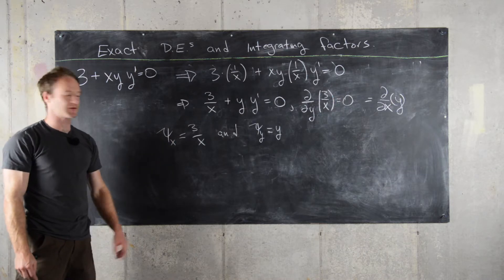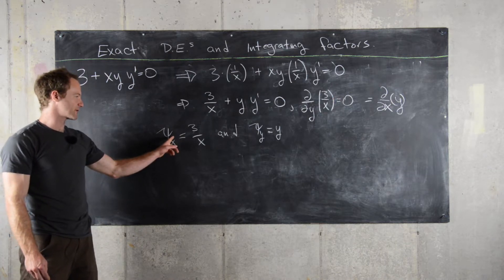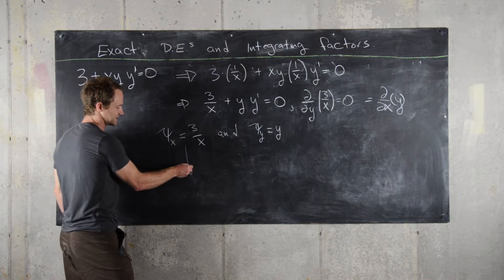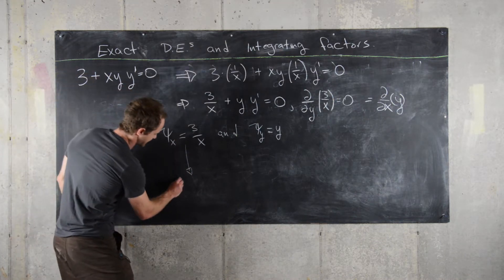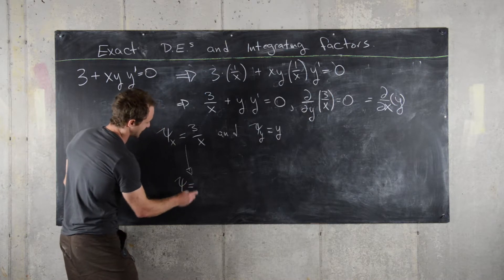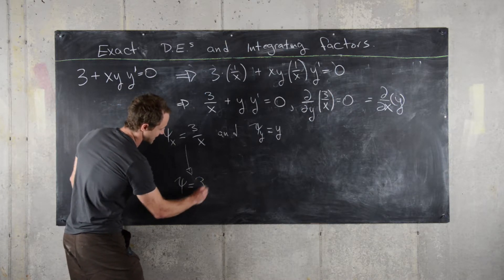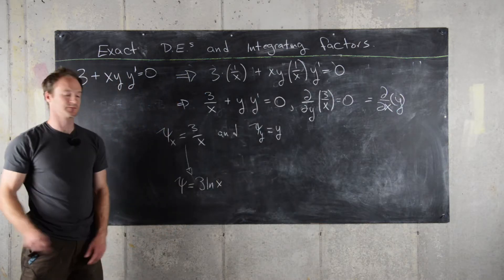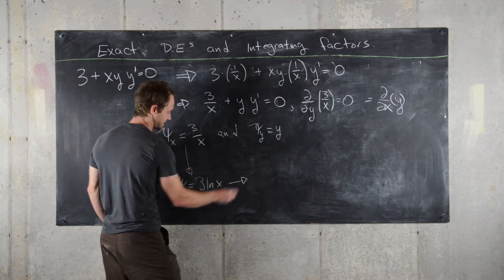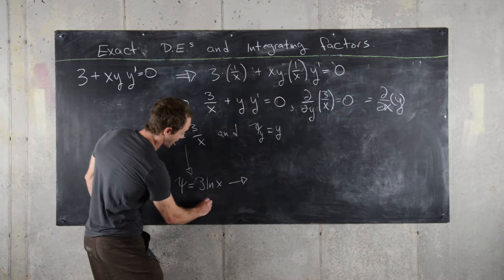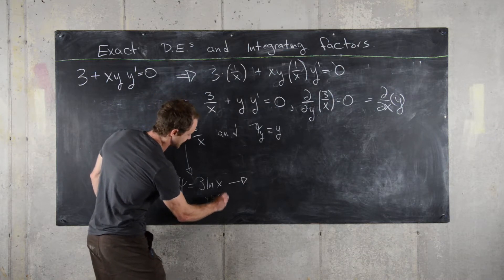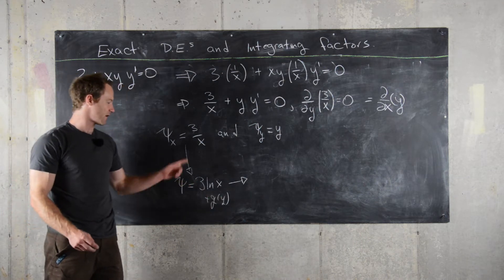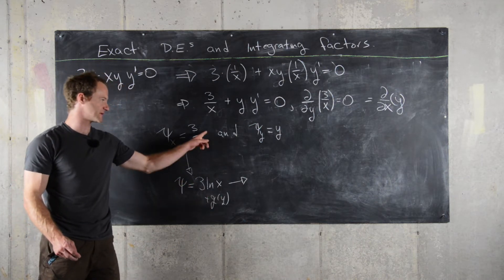So ψ_x = 3/x and ψ_y = y. If we know the partial with respect to x is 3 over x, we can take the antiderivative with respect to x, and that's going to give us ψ equals 3 times the natural log of x plus some function g of y. We need a function g of y because if we take the derivative of that with respect to x, we'll get 0.